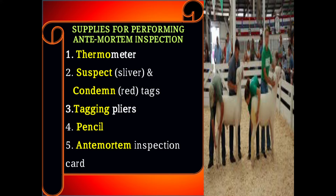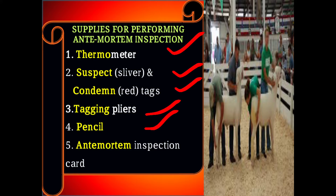Supplies for performing ante-mortem inspection include a thermometer for temperature measurement, suspect and condemned tags for detecting and segregating abnormal animals from healthy ones, pillars and pencil for ante-mortem inspection card formation, and the ante-mortem inspection card itself.